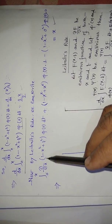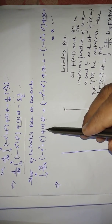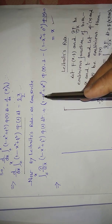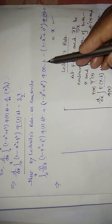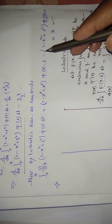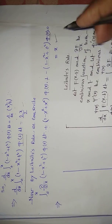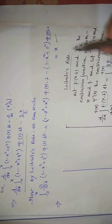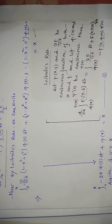So ∂/∂x of (−x² + t²)φ(t) gives −2x·φ(t). The boundary terms cancel since (−x² + x²) = 0, giving us the integral from 0 to x of −2x·φ(t) dt plus φ(x) = x. This is equation (2).